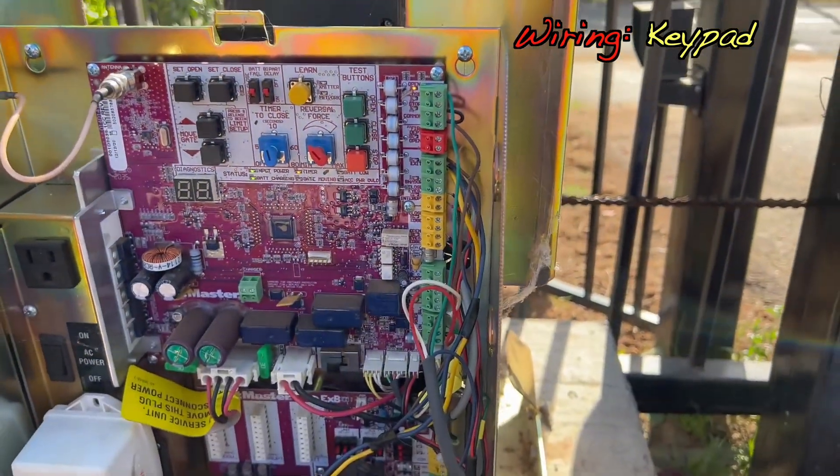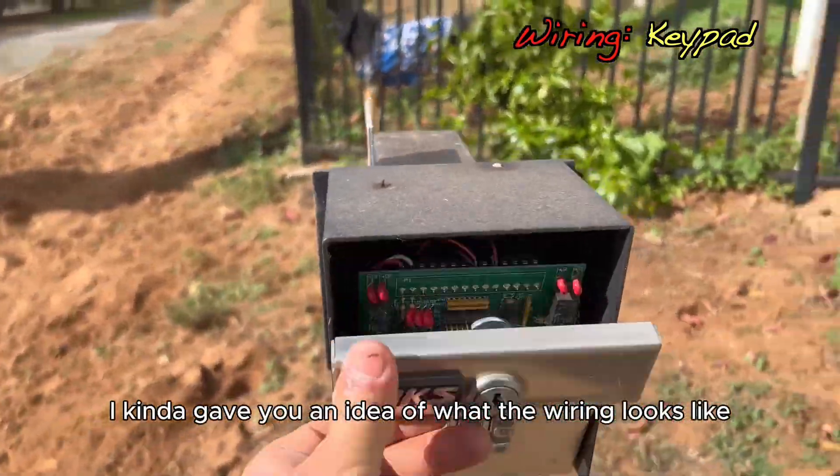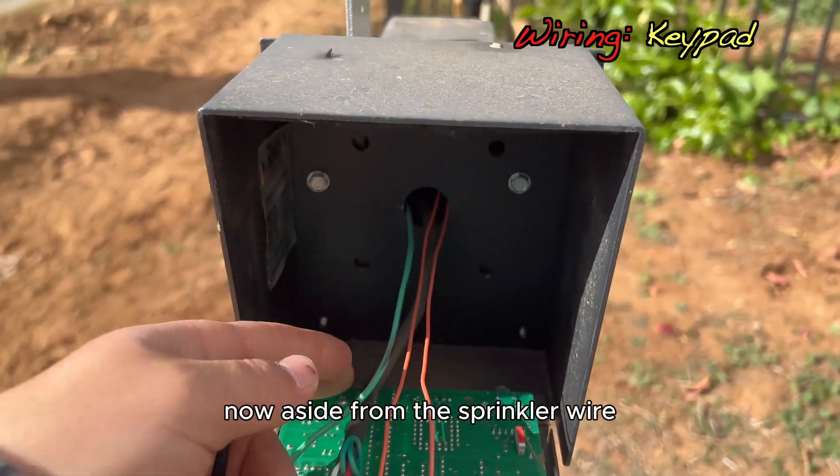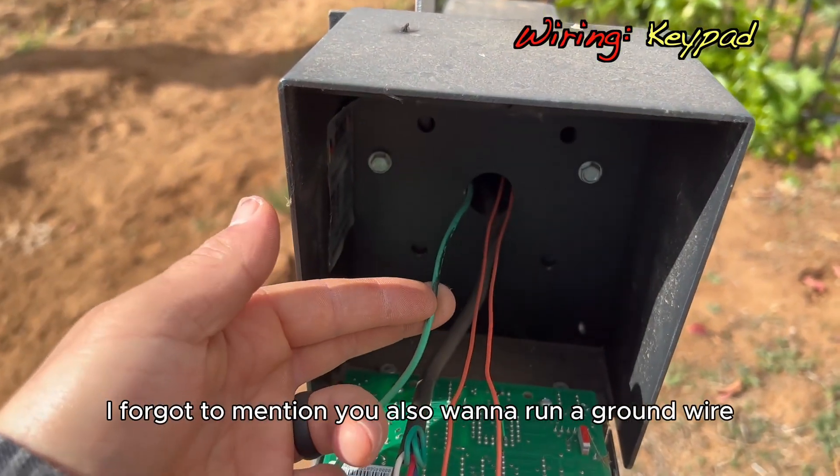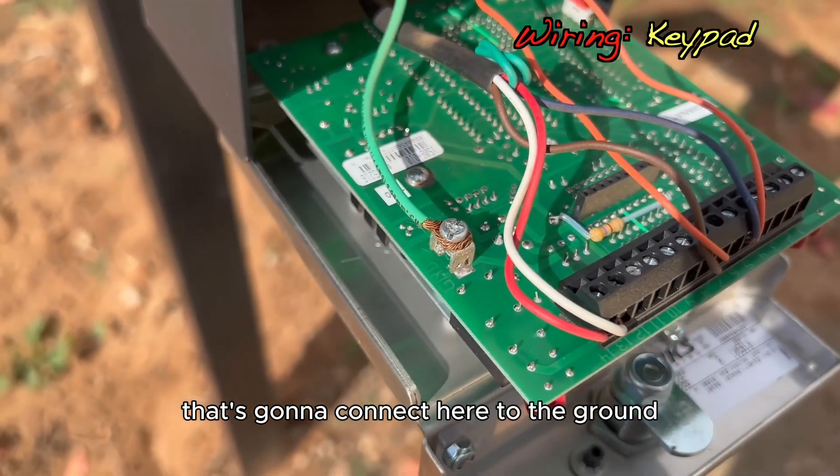So I went ahead and opened this up, so I kind of gave you an idea of what the wiring looks like now. Aside from the sprinkler wire, I forgot to mention you also want to run a ground wire that's going to connect here to the ground.